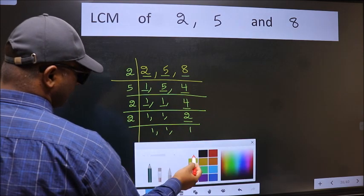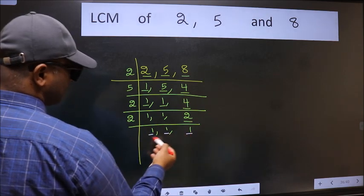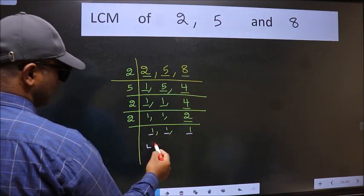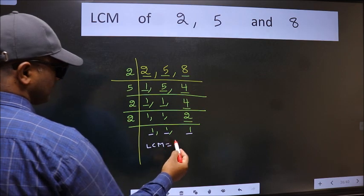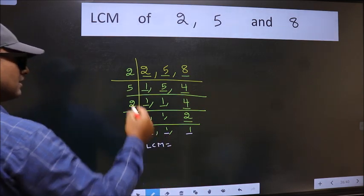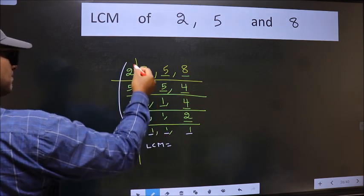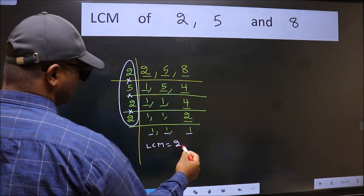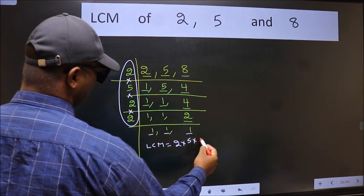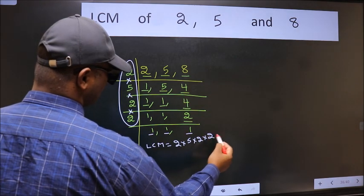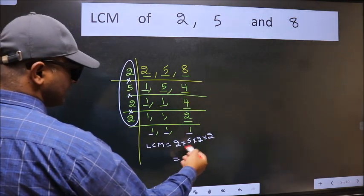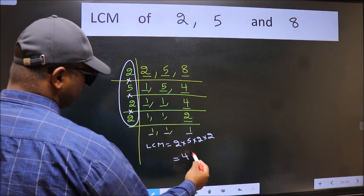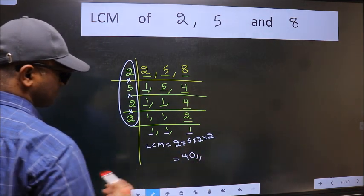So we got 1 in all the 3 places. So our LCM is the product of these numbers. That is 2 into 5 into 2 into 2. When we multiply these numbers we get 40 is our LCM.